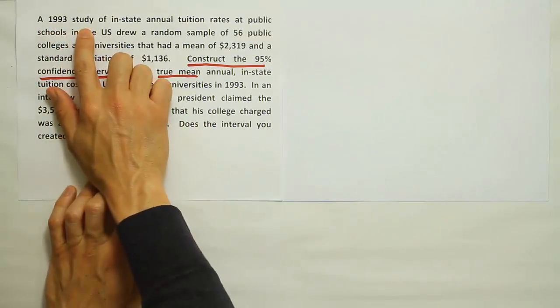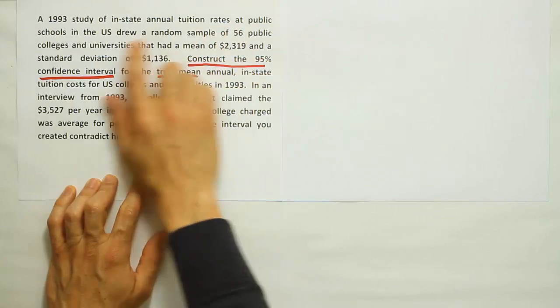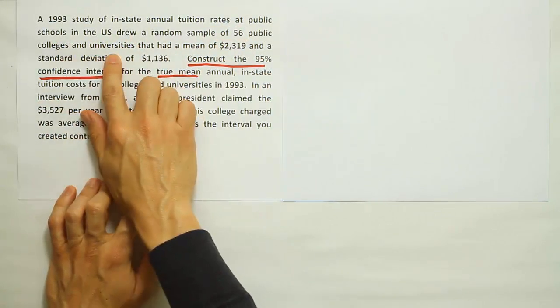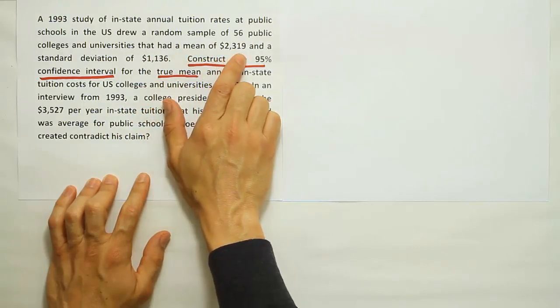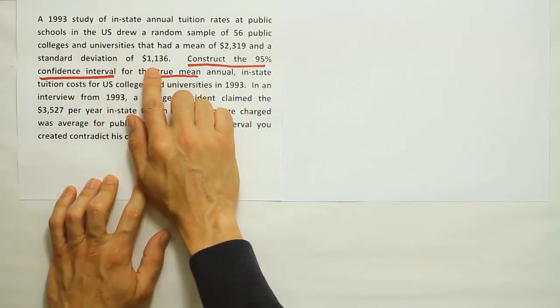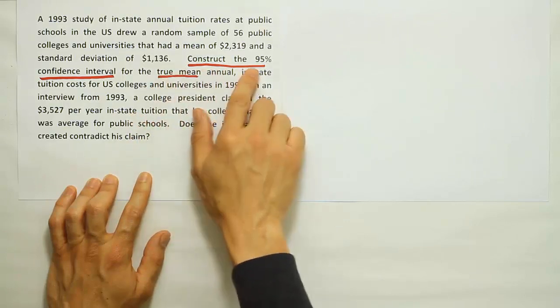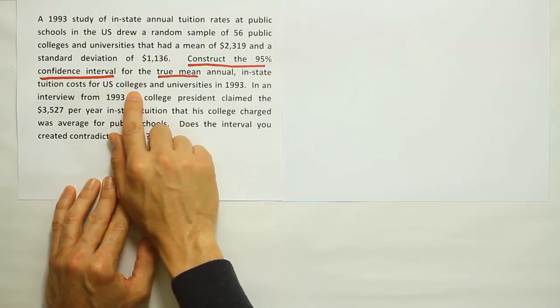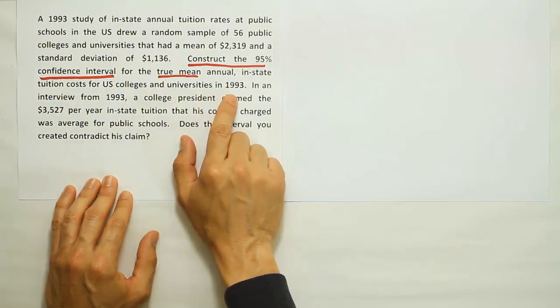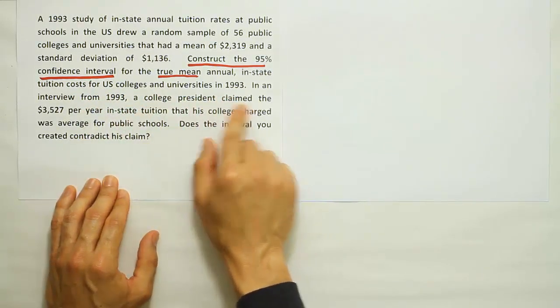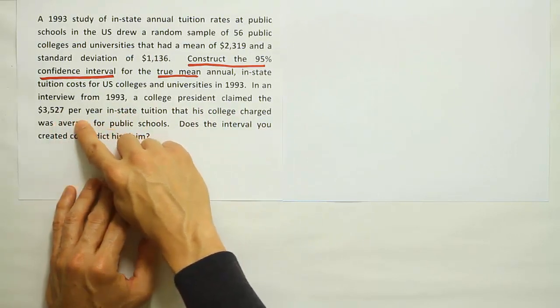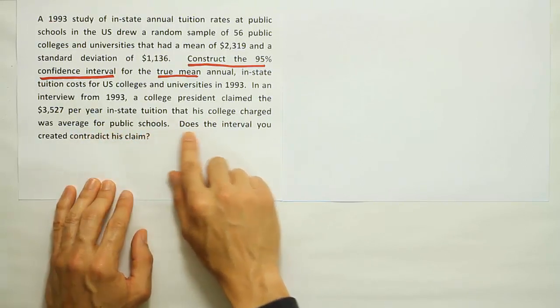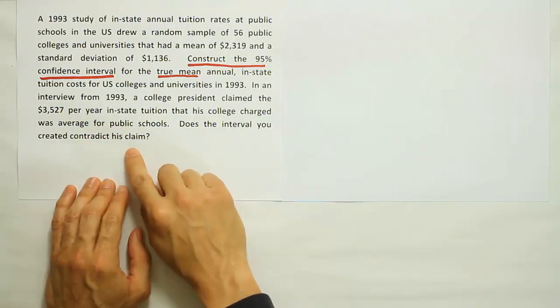In 1993, the study of in-state annual tuition rates at public schools in the U.S. drew a random sample of 56 public colleges and universities that had a mean of $2,319 and a standard deviation of $1,136 to construct the 95% confidence interval for the true mean annual in-state tuition cost for U.S. colleges and universities in 1993. In an interview from 1993, a college president claimed the $3,527 per year in-state tuition that his college charged was average for public schools. Does the interval you created contradict his claim?